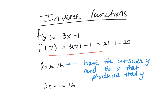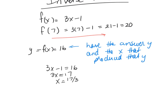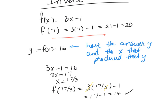When I see f of x equals 16, that says I have the answer. This is the same thing as saying y equals f of x, which is equal to 16, so y equals 16. I can just set my equation equal to 16 and solve. So I get 3x equal to 17, divide both sides by 3, x equals 17 over 3. So if I put 17 over 3 into my original function, f of 17 over 3 equals 3 times 17 over 3 minus 1. My 3s cancel, and I get 17 minus 1, which is 16.